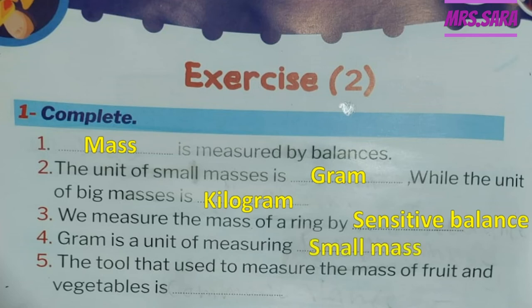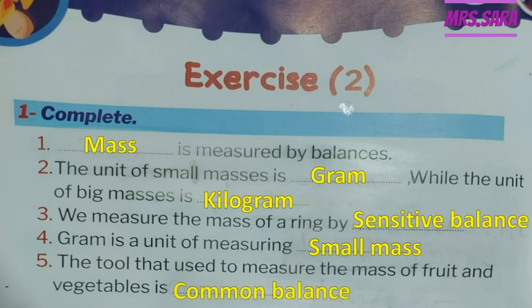Number 5: The tool used to measure the mass of fruit and vegetables is? The magic word here is 'tool,' and we need the measuring tool of fruit and vegetables. Fruit and vegetables are big masses, so we need the measuring tool of big mass, which is the common balance.